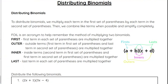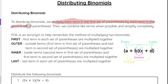So let's start off with a basic setup like we see down here in number one. To distribute binomials, we multiply each term in the first set of parentheses by each term in the second set of parentheses. That is the general pattern for multiplying any polynomials together, including two binomials.